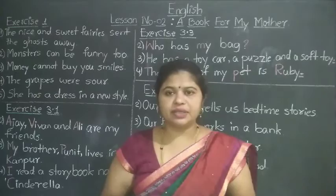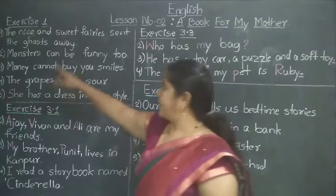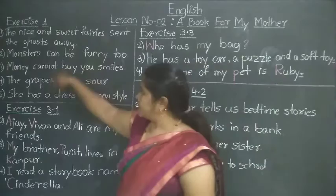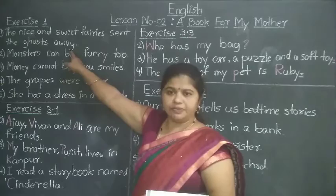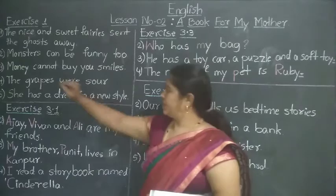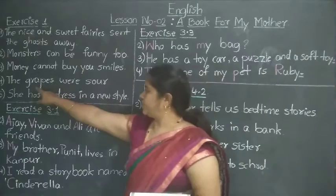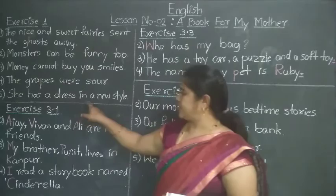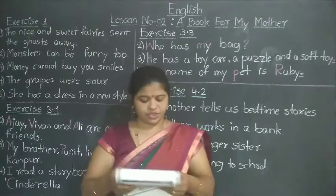Please check your sentences. I have written them already on the board. If you have finished, correct each and every sentence. I will repeat all the sentences once again: The nice and sweet fairy sent the ghosts away. Second: Monsters can be funny too. Third: Money cannot buy you smiles. Fourth: The grapes were sword. Fifth: She has a dress in a new style.